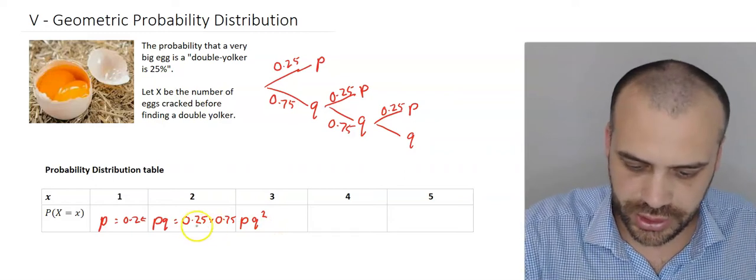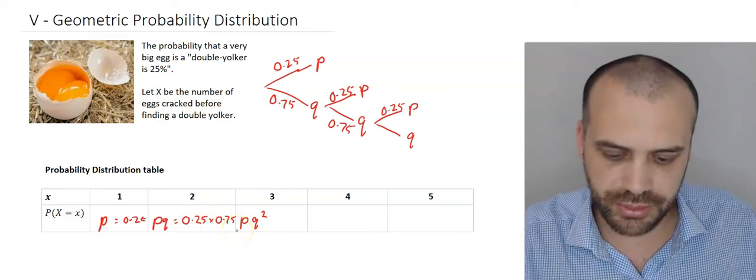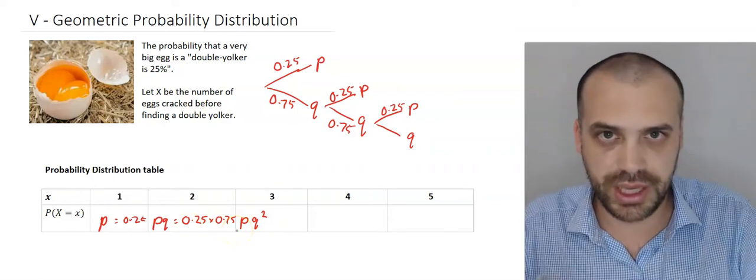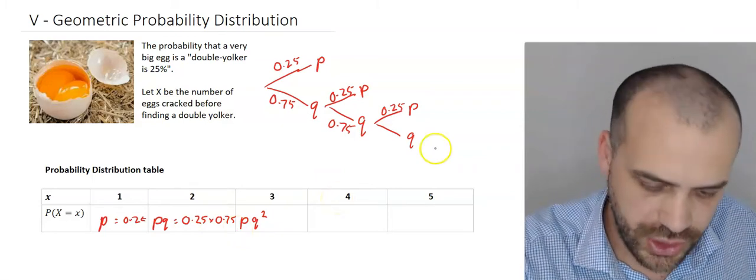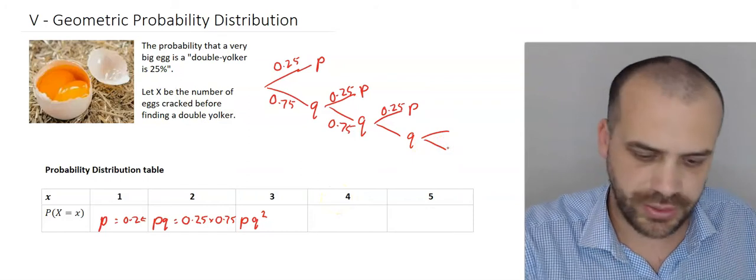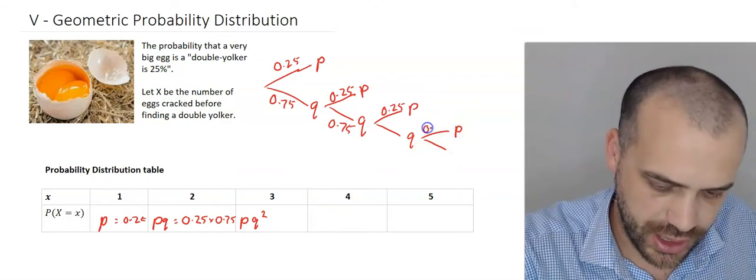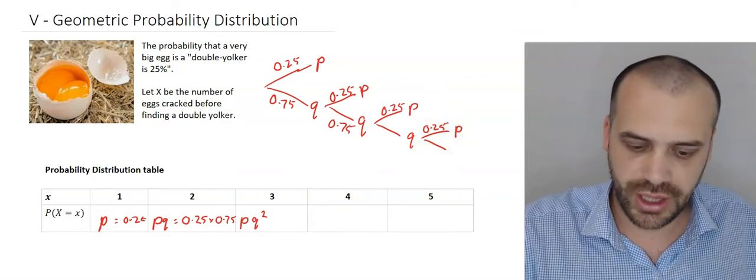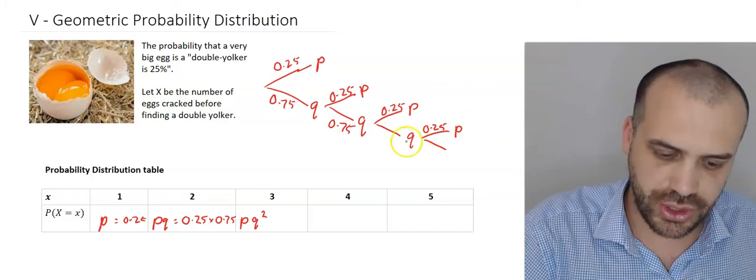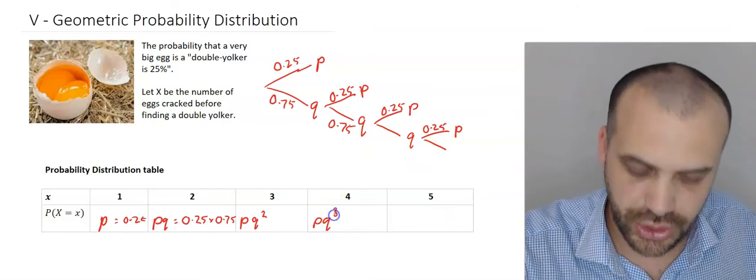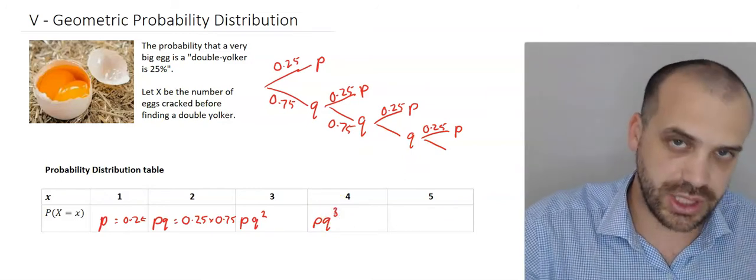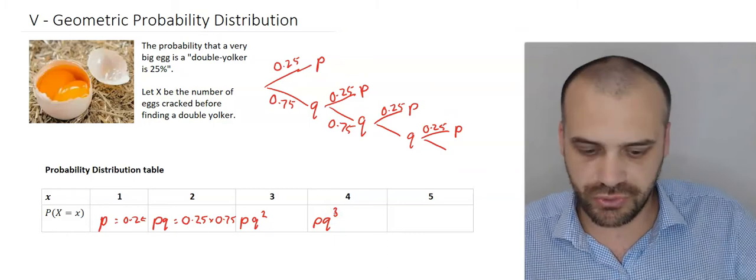I'm not going to write all the numbers in here, but we're just going to focus on that, P times Q squared. The probability of 4, I think you can see the pattern here. We've got another P here, a 0.25. And so that's going to be Q times Q times Q, and then a P. So P times Q cubed. And then the next one's going to be P times Q to the 4.